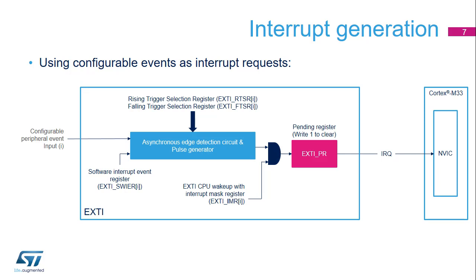This figure explains the various stages enabling the conversion of a configurable peripheral event active edge into an interrupt request. The first stage is the asynchronous edge detection circuit configured by two registers, EXTI_RTSR and EXTI_FTSR. Any edge, possibly both, can be chosen. The software can emulate a configurable event by setting the corresponding bit in the EXTI_SWIER register. The bit is auto-cleared by hardware.